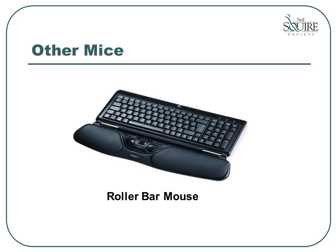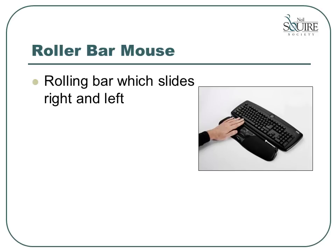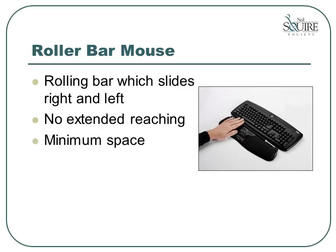There are some other assistive technology mice which do not fit into any of the categories discussed so far. One of these is called the roller mouse. This mouse is built into a unit which sits along the front edge of your keyboard. In the center of the unit is a rolling bar which also slides back and forth — this bar controls the movement of the mouse. With this unit, there is no extended reaching for mouse control, and it takes up a minimum amount of space on your desk. The roller bar requires a very light touch to control it, making it suitable for someone who has a limited range of motion but good fine motor skills — for example, a person with muscular dystrophy.